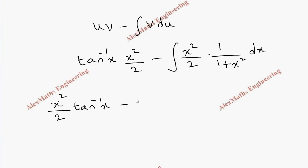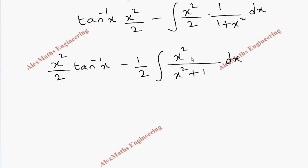The next term is we can take 1 by 2 outside so we're left with x square by, this I will write it in the reverse order, x square plus 1 dx. Now we notice both the powers are same. We can do either long division or we can do some alteration. The alteration is we put plus 1 and minus 1.